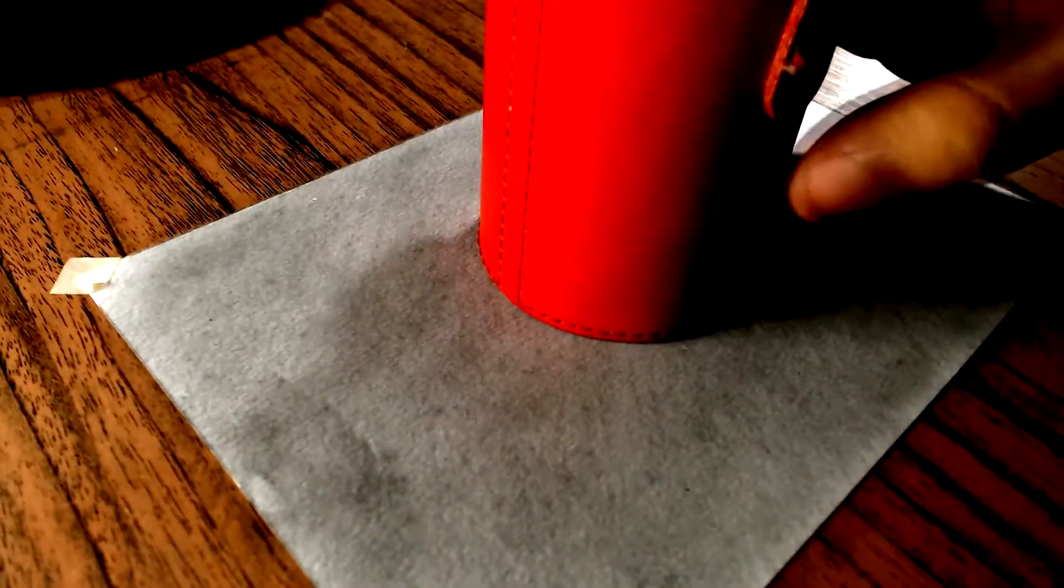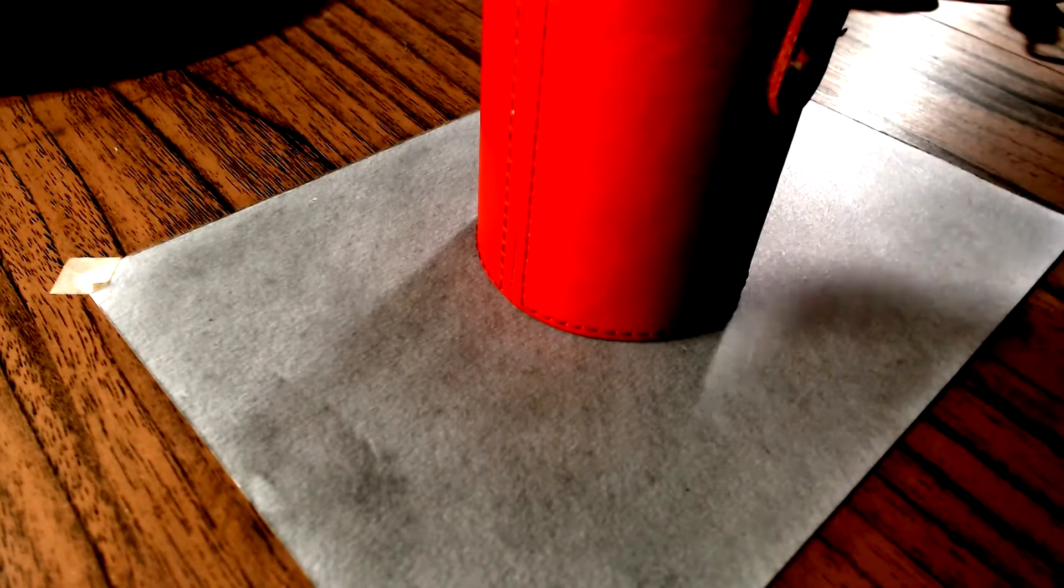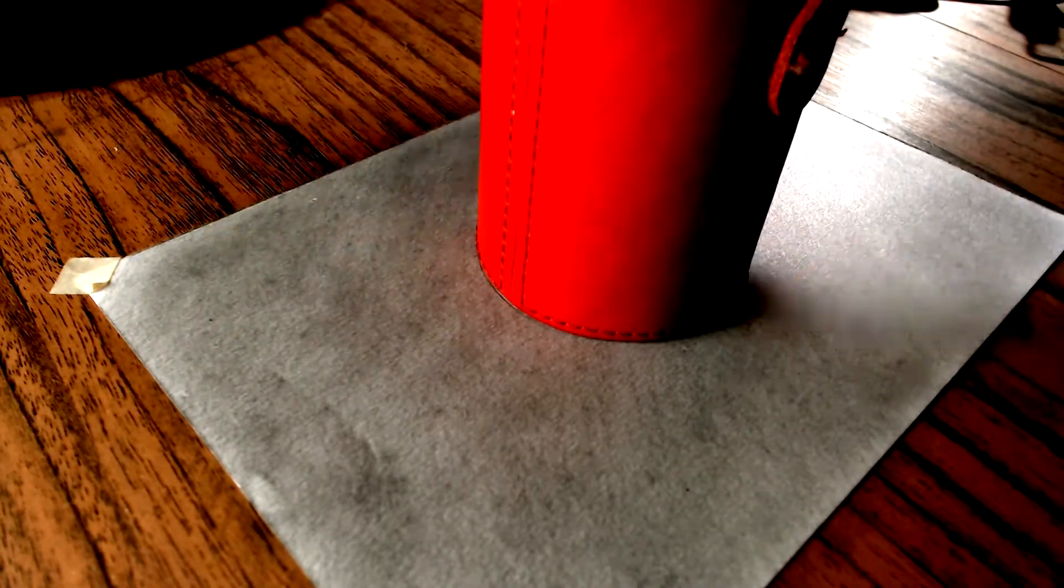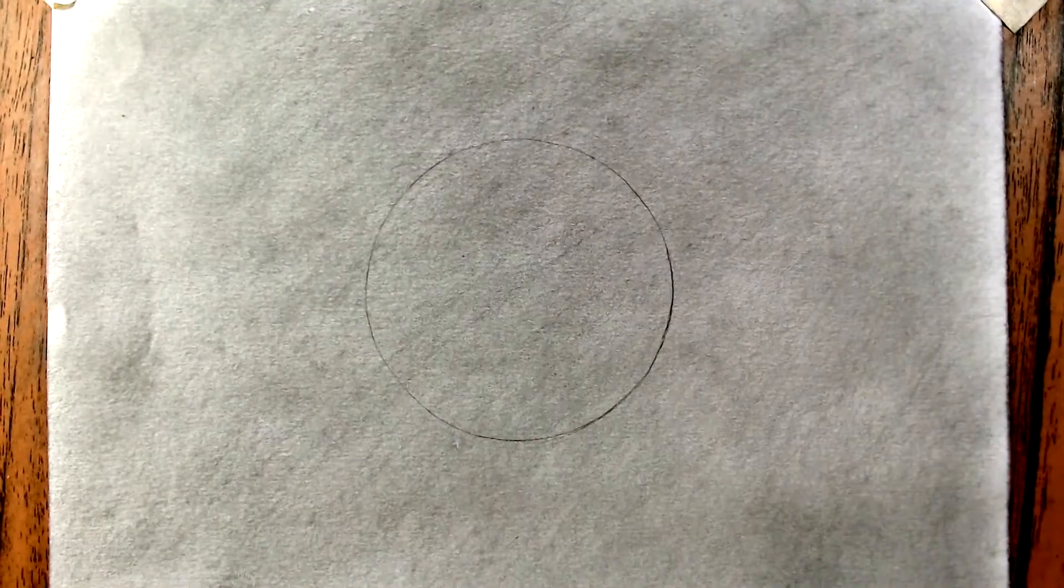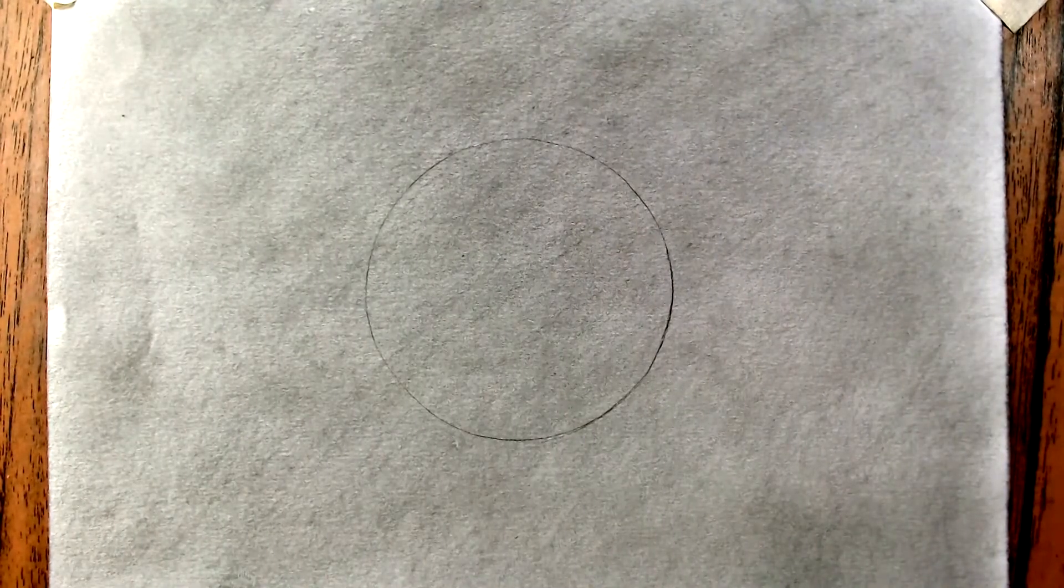Now for this step, we are going to create a circle. You can use a round object to help you in this process. Perfect. By the end of this video, we are going to make our drawing look like this.